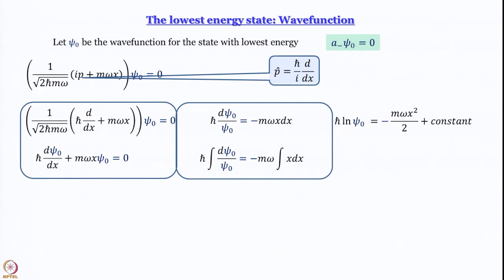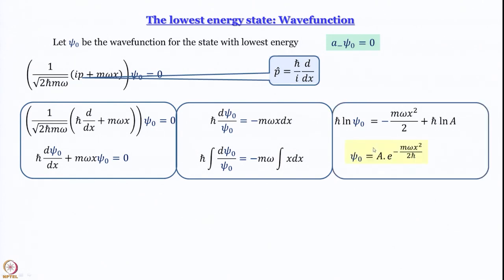For convenience, we write the constant in logarithmic form as ℏ · ln(A), so that we can combine it with the left side: ℏ · ln(ψ₀/A) = −mω·x²/2. Raising both sides to the power of e gives: ψ₀ = A · e^(−mωx²/2ℏ).